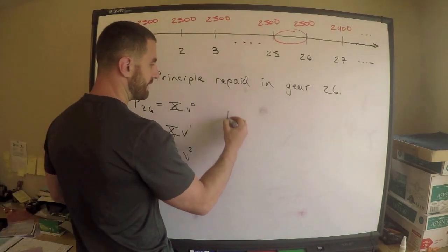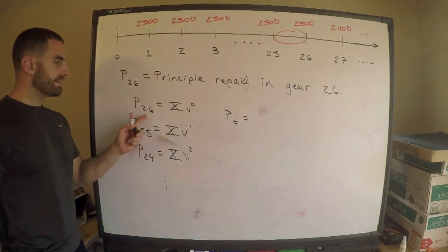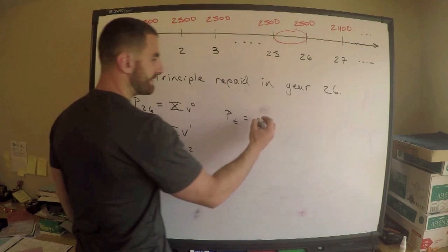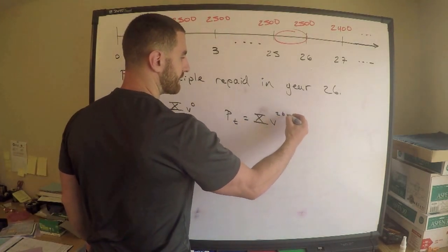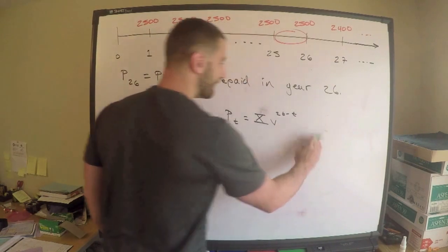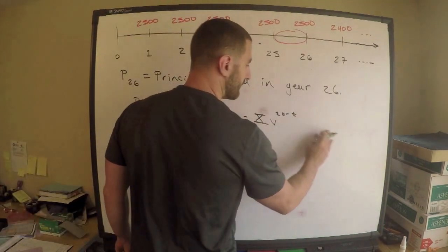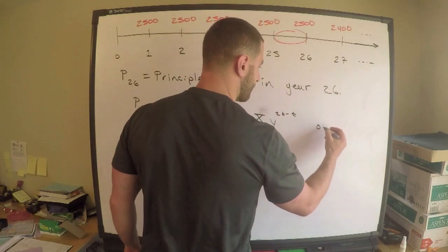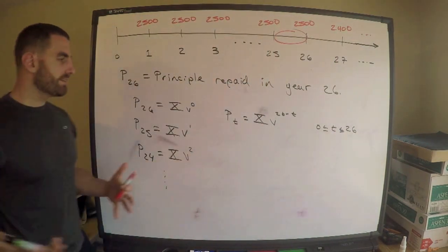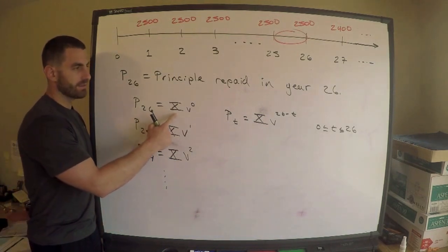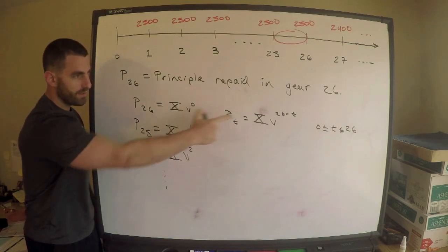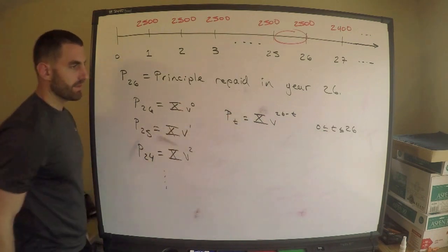What is P sub T for T less than or equal to 26? I can't say anything after 26 because everything changes, it's no longer level anymore. What I can say is that this is X V to the 26 minus T. This is only for T, for 0 less than or equal to T less than or equal to 26. Whenever you write down something like this, just make sure it checks. If T is 26, then I get X, so that works out. If T is 25, then I get X V, good. If T is 24, I get X V squared, good.